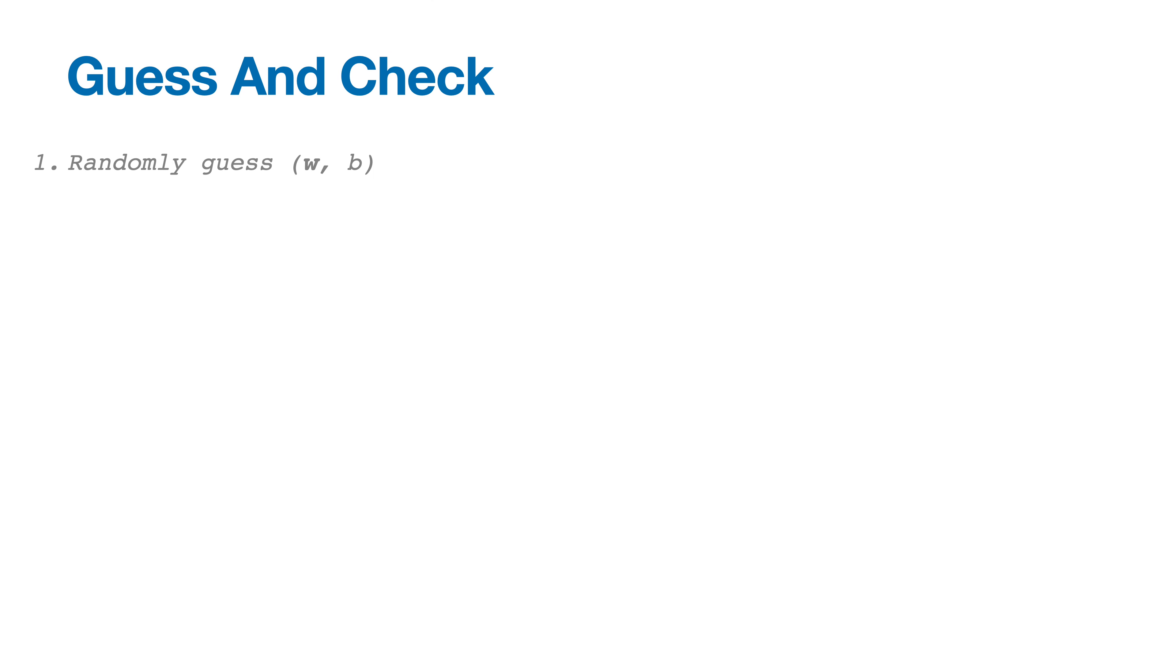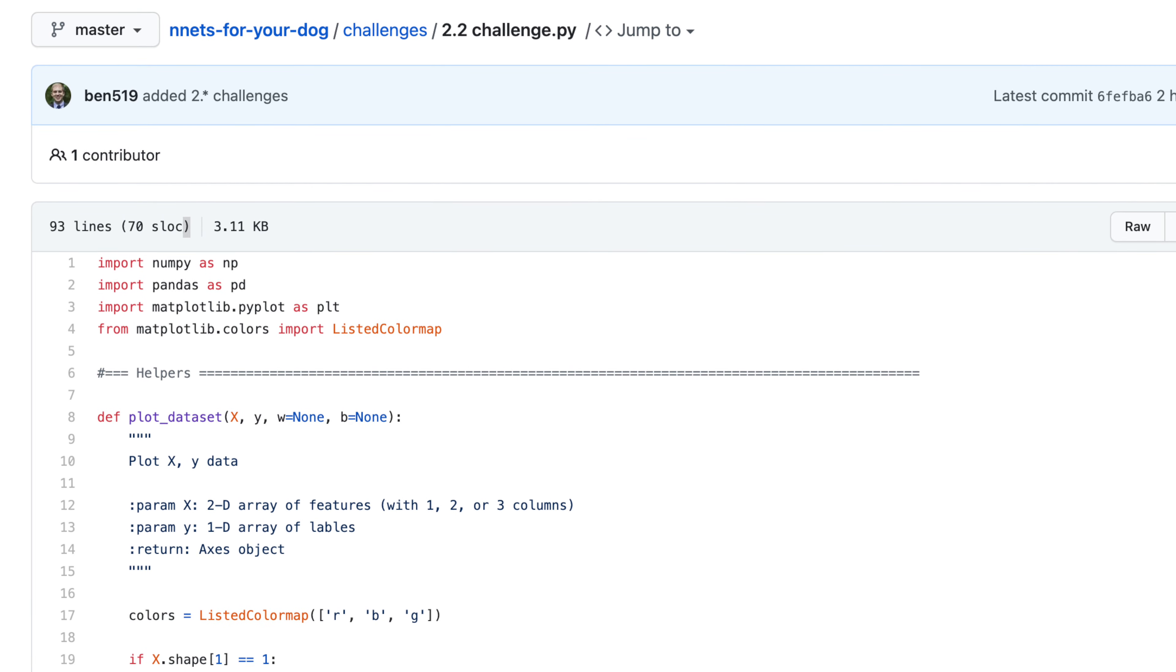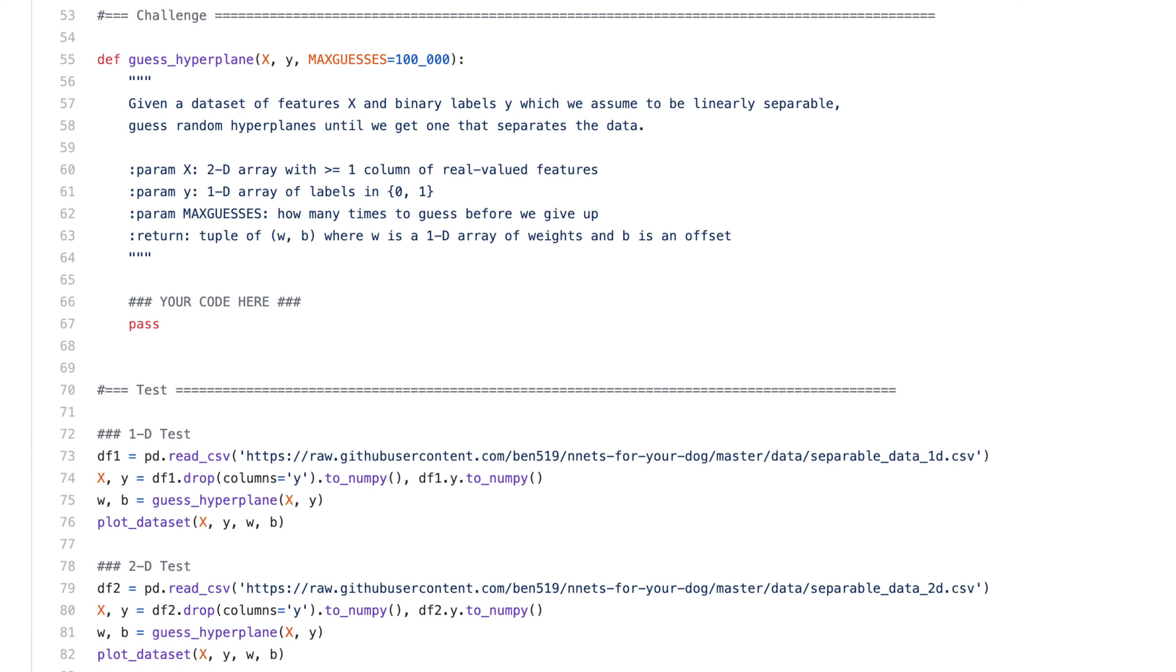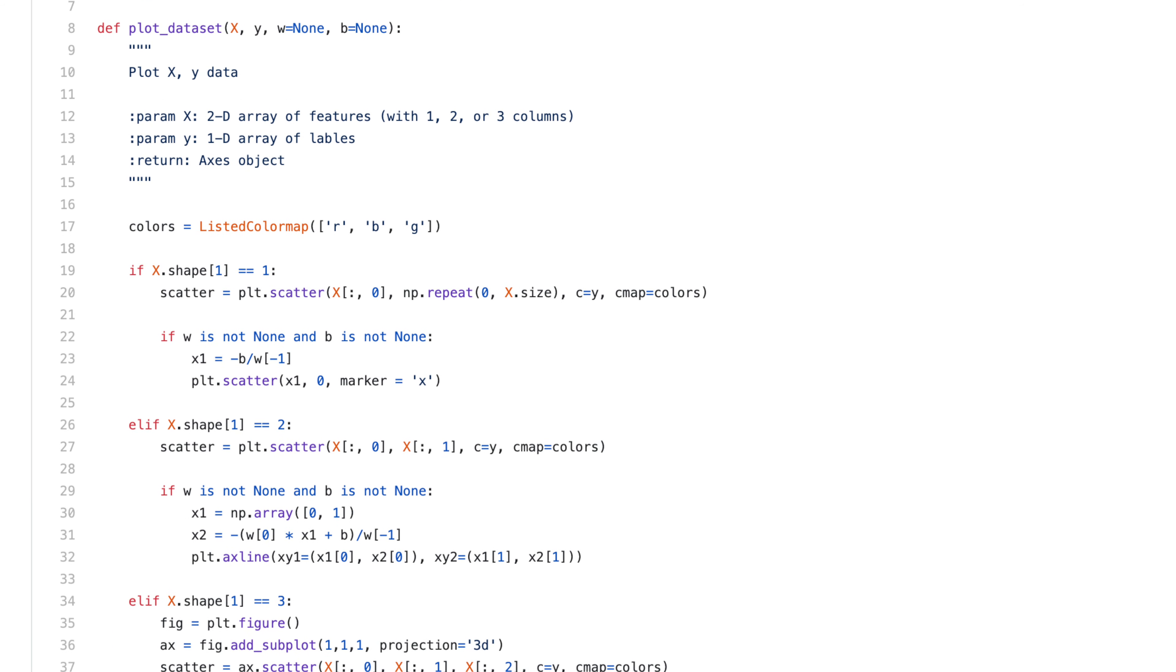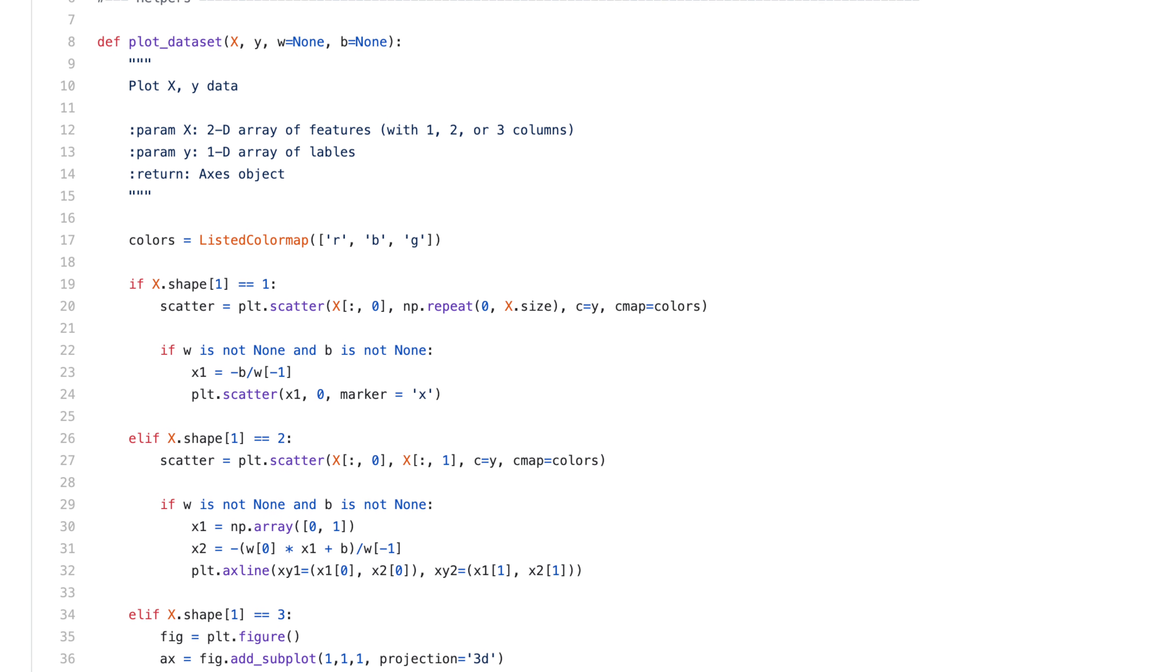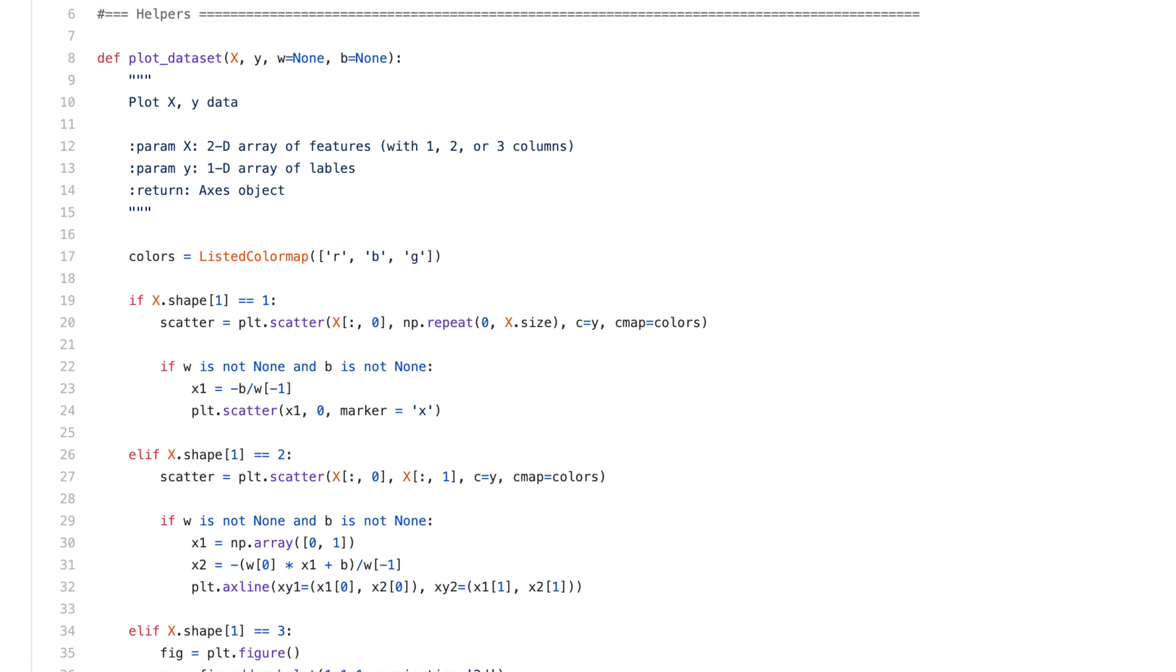Well, let's use my favorite algorithm, guess and check. Just randomly guess some weights, and an offset, and check if they separate the data. If they do, we're golden, and if they don't, just keep guessing. My challenge to you is to write a program that does this. To help you get started, I created a python file called 2.2 challenge, which contains some starter code and references to some known separable datasets. I also made a function called plotDataset, which lets you plot a 1D, 2D, or 3D dataset with a hyperplane. So pause the video and see if you can implement a guess and check program for finding a separating hyperplane.